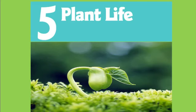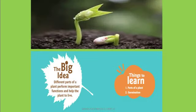So, things to learn: as I told you, two main things we are going to learn. First is parts of a plant — we know that plants have various parts, so we are going to recognize and study about them one by one. And the second is we are going to study about the process of germination.